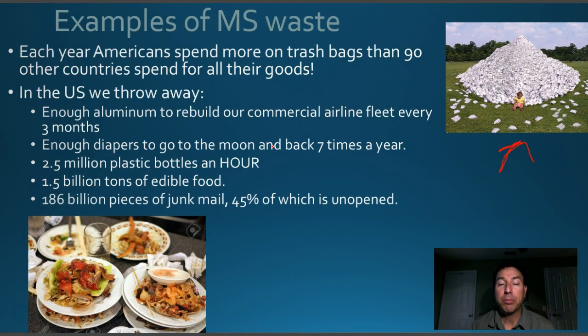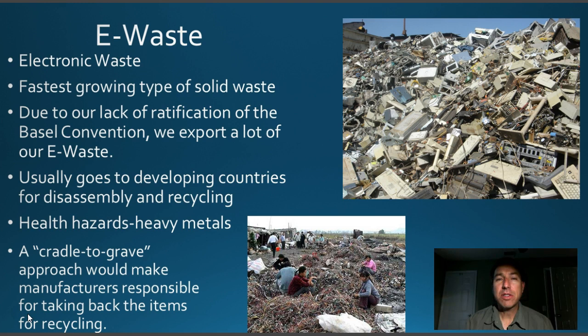Tons of plastic bottles get thrown away even though they're all recyclable. Edible food is another massive waste stream — people constantly throw away full plates of food, our eyes are always bigger than our stomachs, and we waste a lot of food in this country. Junk mail is also out of control; almost half of the junk mail sent out is never opened and goes directly into the trash, even though it could be recycled.